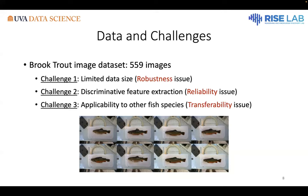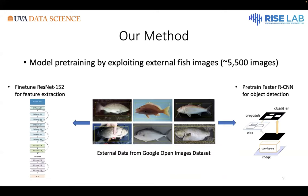Taking all these things into account, we designed the first version of our solution. The first part is model pre-training using external fish images. Since only 500 fish images are not enough to train a deep learning model, we leveraged the Google Open Images dataset, which has at least 5,000 fish images with labels and bounding boxes. We use those images to pre-train a Fast RCNN network for object detection and fine-tune a ResNet-152 model for fish extraction — and results show these practices have been very successful.